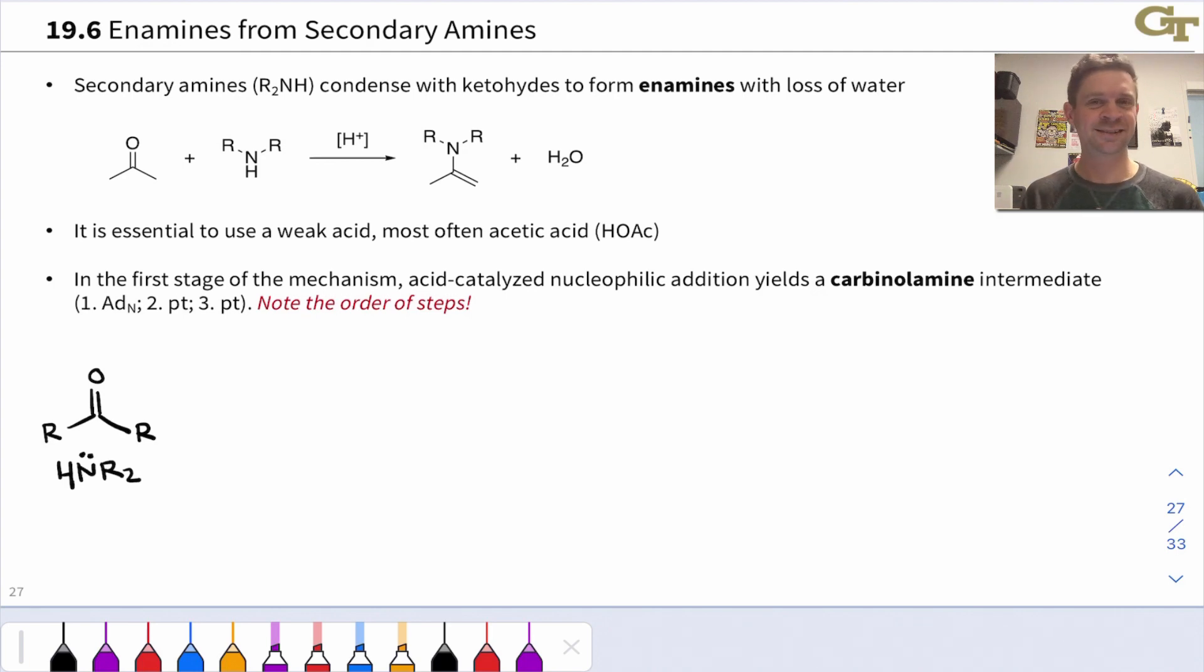Secondary amines cannot form a CN double bond and form a neutral product, so the result of condensation when a secondary amine reacts with a ketone or aldehyde is a structure known as an enamine, and that's the structure we see right here.